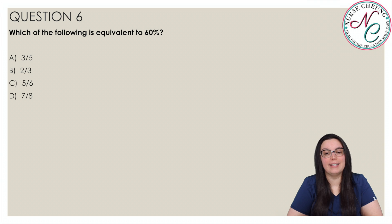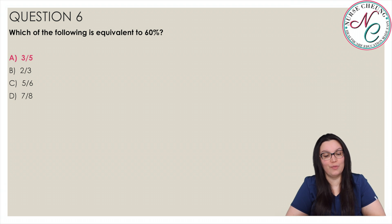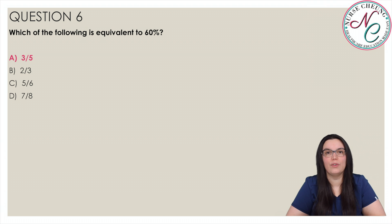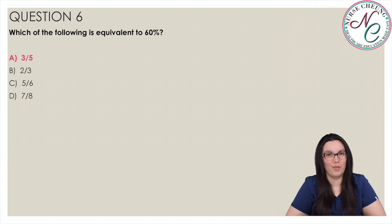Which of the following is equivalent to 60%? Is it A, 3 over 5; B, 2 over 3; C, 5 over 6; or D, 7 over 8? The correct answer is A, 3 over 5. To convert a percentage to a fraction, we take 60% — just 60 — as our numerator and place it over 100 as our denominator, giving us 60 over 100. That reduces to 3 over 5.